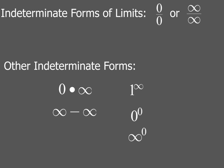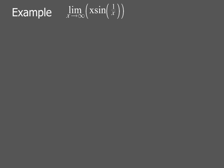Now let's go ahead and take a look at an example. We're going to evaluate the limit as x goes to infinity of x times sine of 1 over x. The first thing we always want to try when evaluating limits is direct substitution, so if we put in infinity for x,